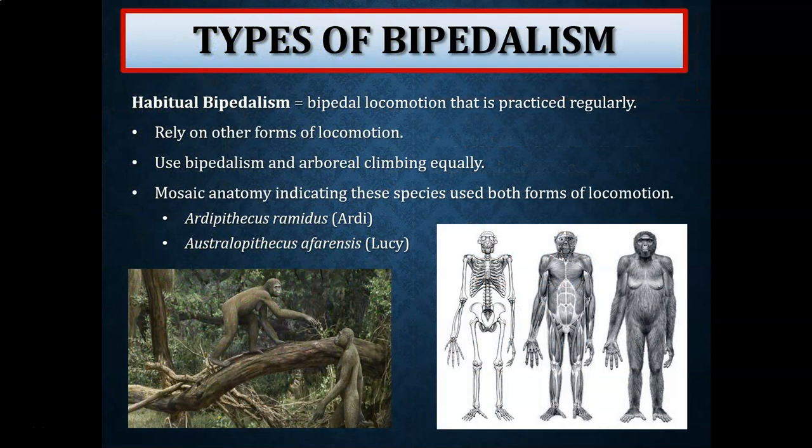The next type is habitual bipedalism — bipedal locomotion that is practiced regularly. However, these bipeds also rely on other forms of locomotion, using bipedalism and arboreal climbing equally. It is likely that our earliest bipedal ancestors were habitual bipeds, displaying a very mosaic or mixed anatomy indicating they utilized both forms of locomotion.